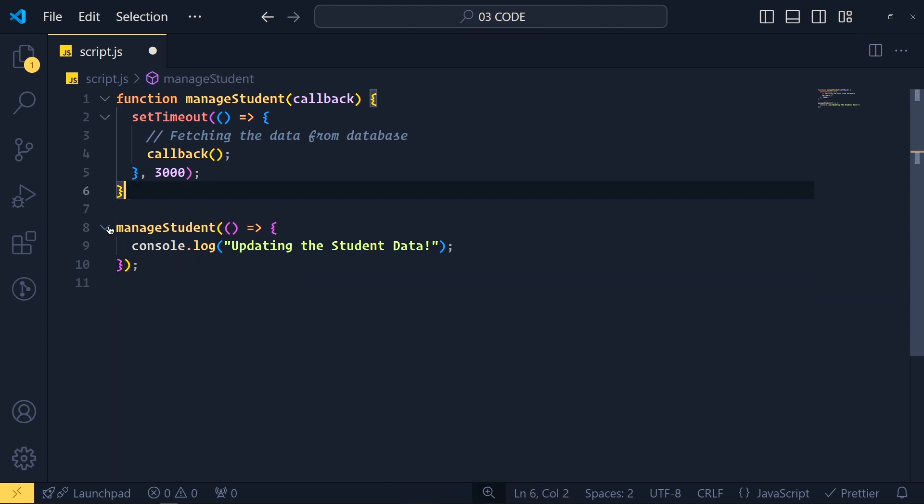See now our code looks simple and this way is very useful in JavaScript. Because as you notice, we always pass callback functions like this. Instead of declaring it separately, we define it directly here.